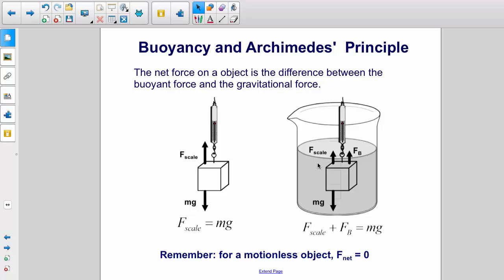Now, let's look at the two figures on this slide. On the left, we have an object that is suspended by a spring scale and the spring scale exerts a force upward which exactly balances the weight of the object. And F scale is equal to mg.